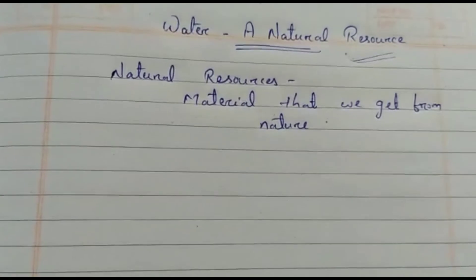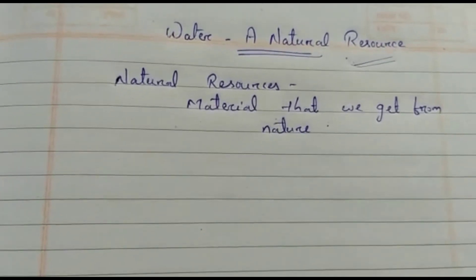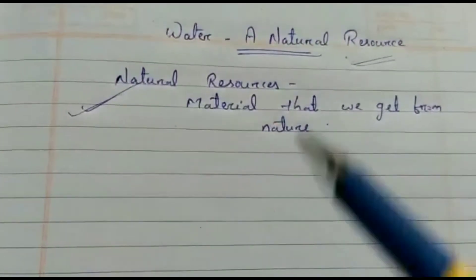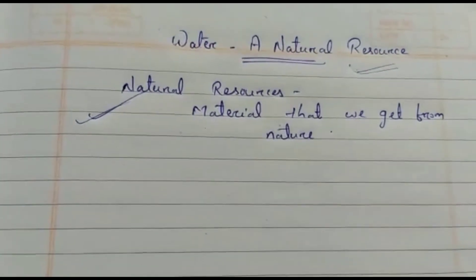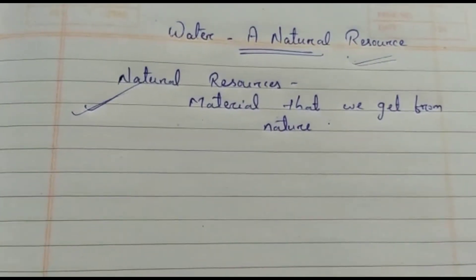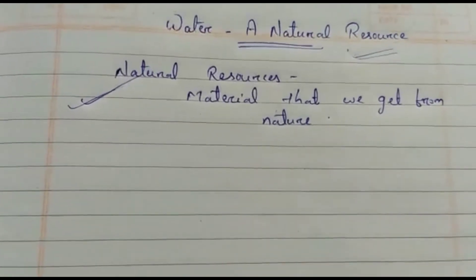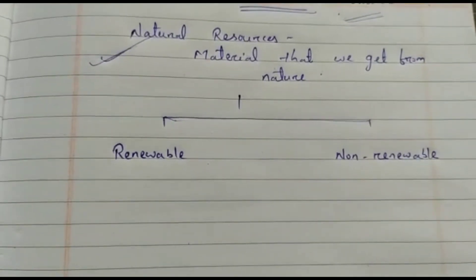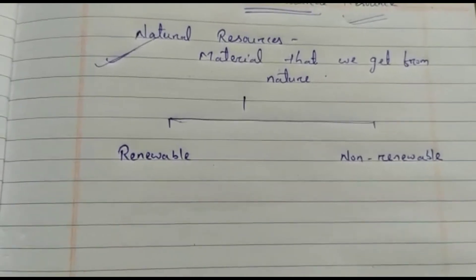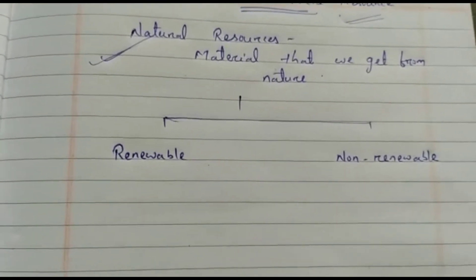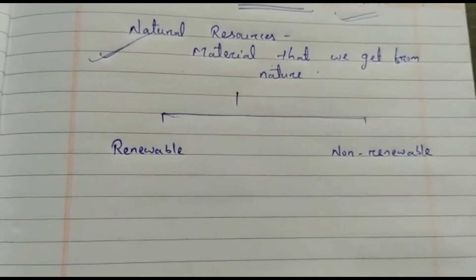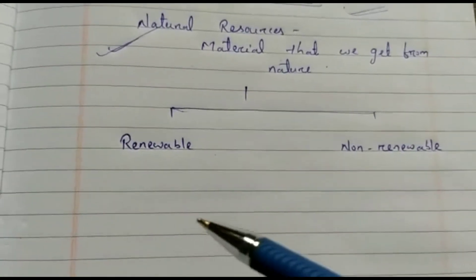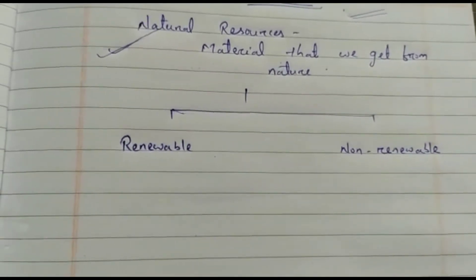These natural resources are classified into two broad categories: renewable and non-renewable resources. Renewable resources never get completely used up — they get replaced within a short span of time. But non-renewable resources run out after continuous use and do not get replaced in a long time. Now we will discuss renewable and non-renewable resources with a few examples.